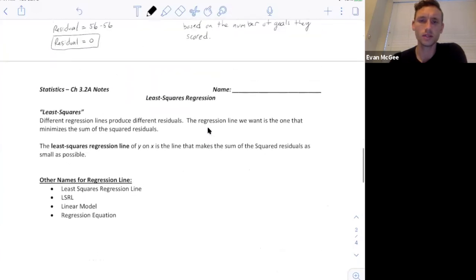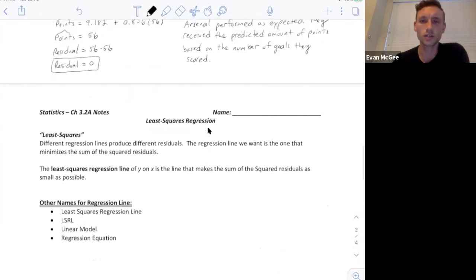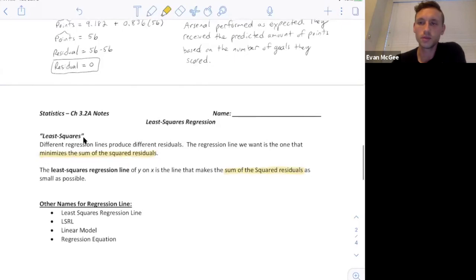The last concept I want to talk about is this idea of least squares regression. Why is it called least squares? And it's really simple. It's called the least squares regression line because it wants to minimize the sum of the squared residuals and the least squares regression line of y on x is a line that makes the sum of the squared residuals as small as possible.